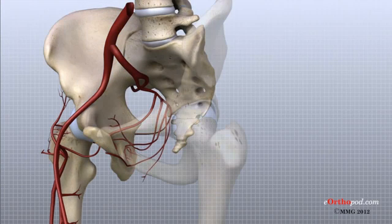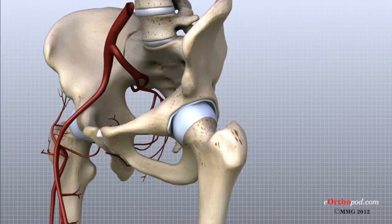Other small vessels form within the pelvis and supply the back portion of the buttocks and hip.